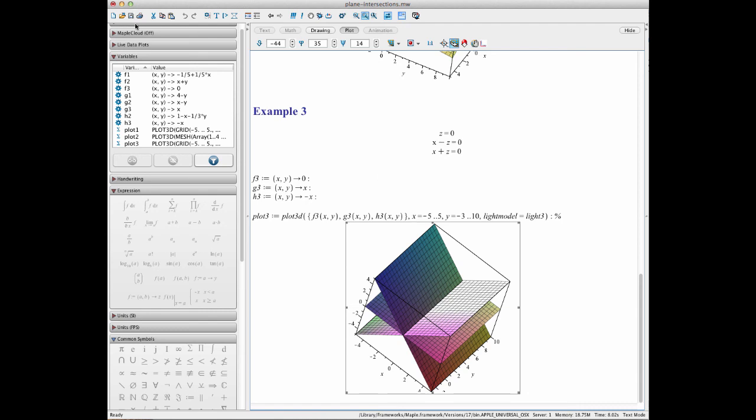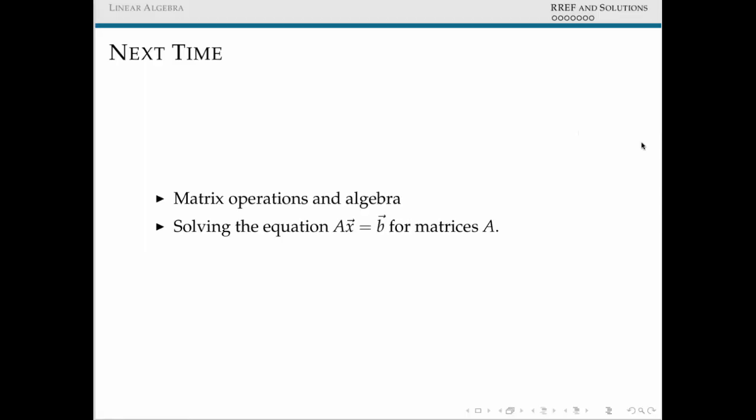When we come back next time, we're going to look at matrix operations. So how can we multiply a vector and a matrix together, and what would multiplication of matrices really mean, and look at how this ties into repackaging a lot of the material that we've done so far in finding solutions for linear systems into solving equations that involve matrices and vectors. See you guys next time.